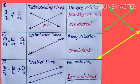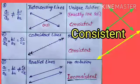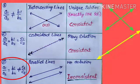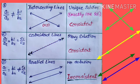So in both cases, the lines are touching at one point or many points, meaning they are consistent. In the third case, if a1 upon a2 equals b1 upon b2 but is not equal to c1 upon c2, then both lines are parallel lines with no solution. Since they are not intersecting or touching each other, this type of system is called inconsistent.